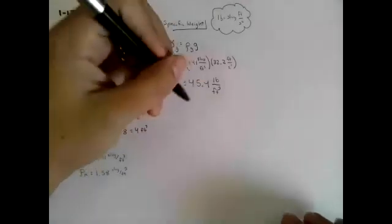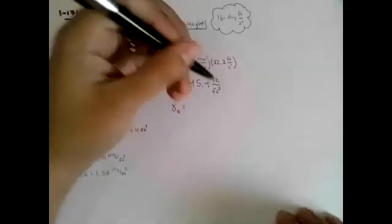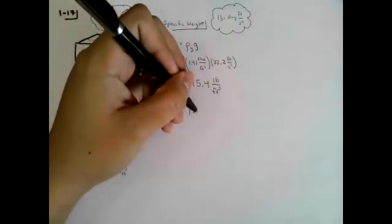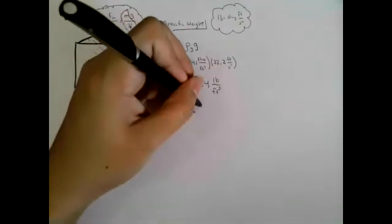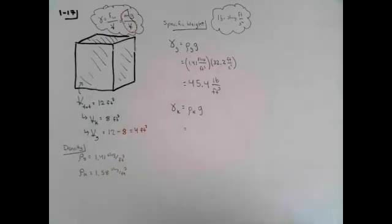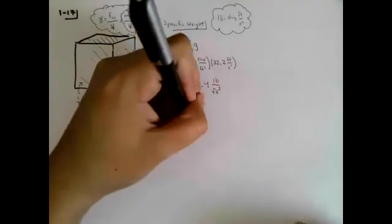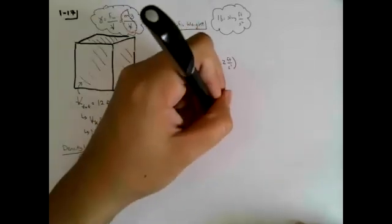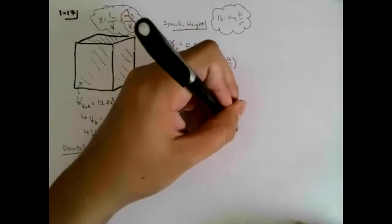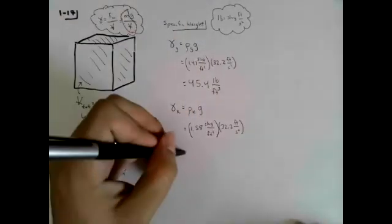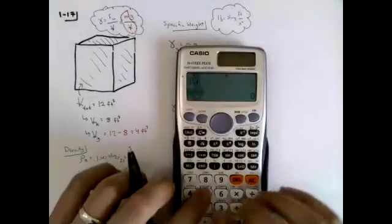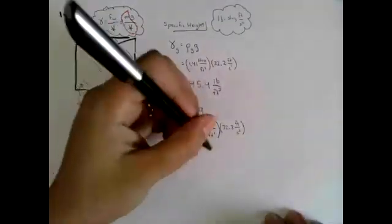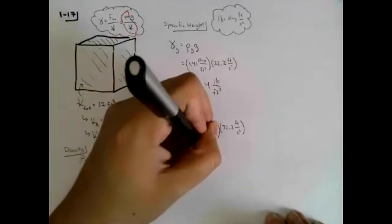Similarly, we find the specific weight of kerosene by multiplying its density by gravitational acceleration: 1.58 slugs per cubic foot times 32.2 ft/s². That gives a specific weight of kerosene of 50.9 lb/ft³.